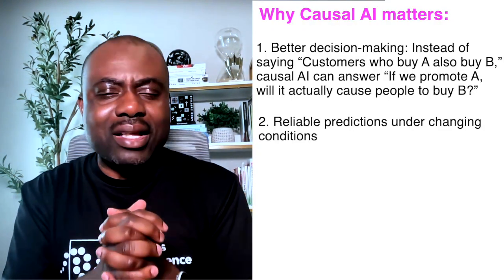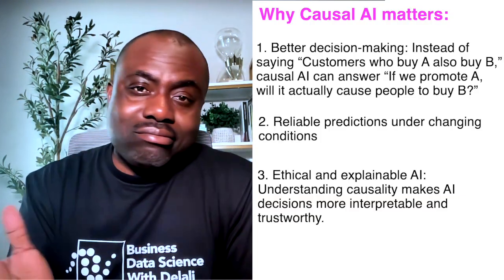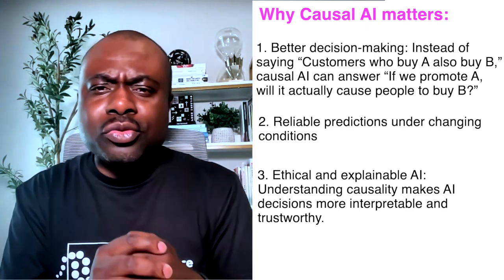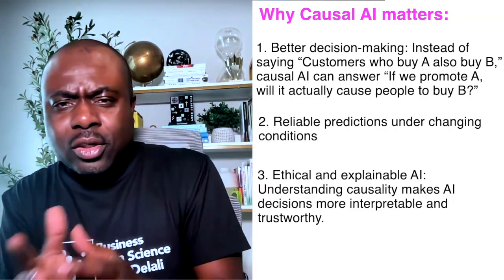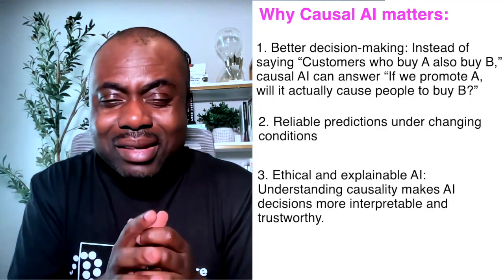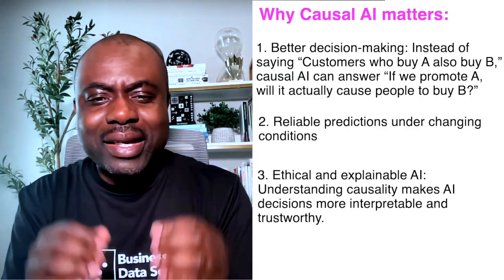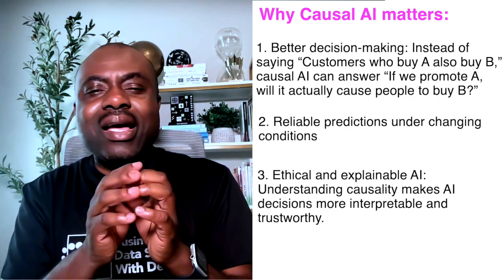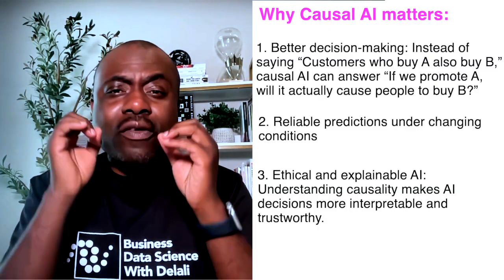The third reason is that ethical and explainable AI is more needed than ever. AI is making very important decisions — from medical diagnosis to loan approvals and disapprovals, credit cards, and even facial recognition. AI is being used to make critical decisions, and it is important that we can explain why the AI is predicting or making the decision it is making. Causal AI is important for understanding the causality behind AI decisions.